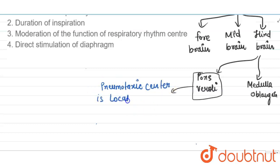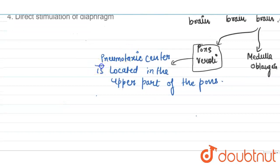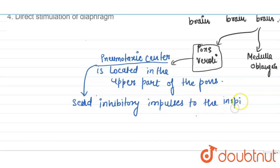Pneumotoxic center is located in the upper part of the pons, and this pneumotoxic center sends inhibitory impulses to the inspiratory center.